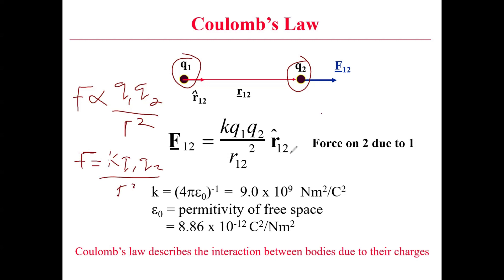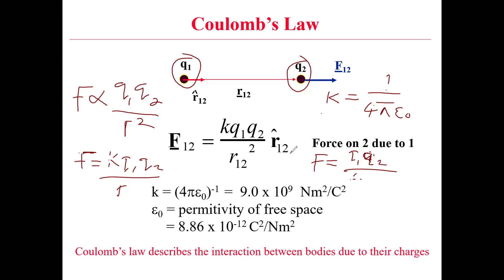The constant k can also be expressed as one over four times permittivity — that is, k equals 1 over 4πε₀ (permittivity of free space). So at the end we have F is equal to q₁q₂ all over 4πε₀ times r squared.